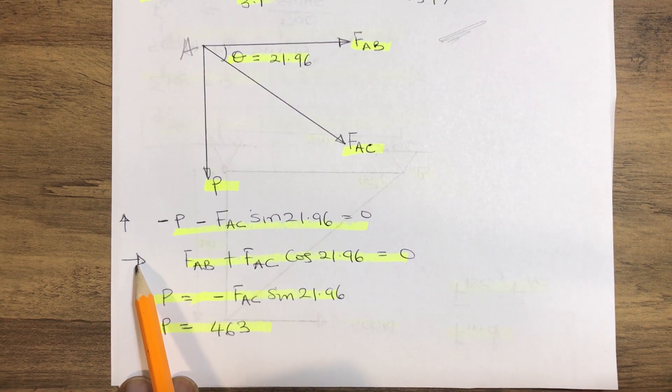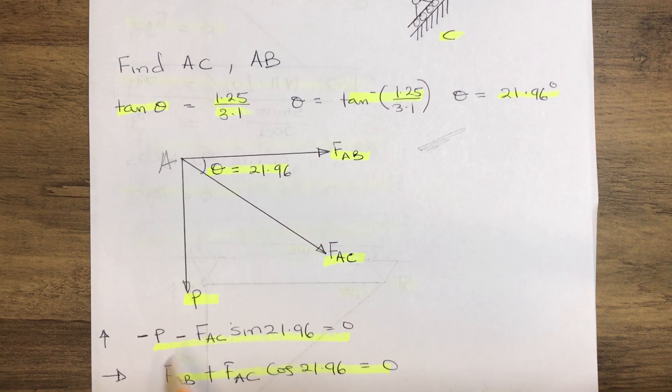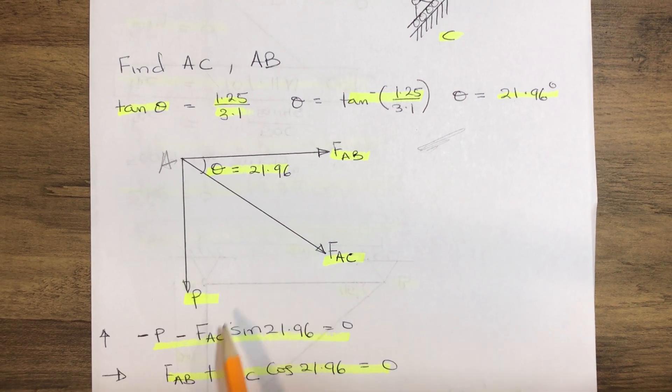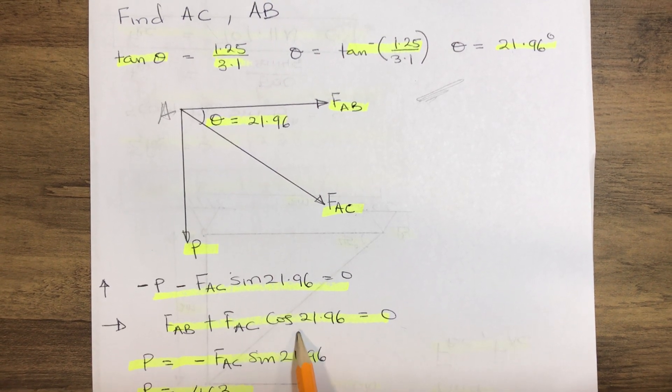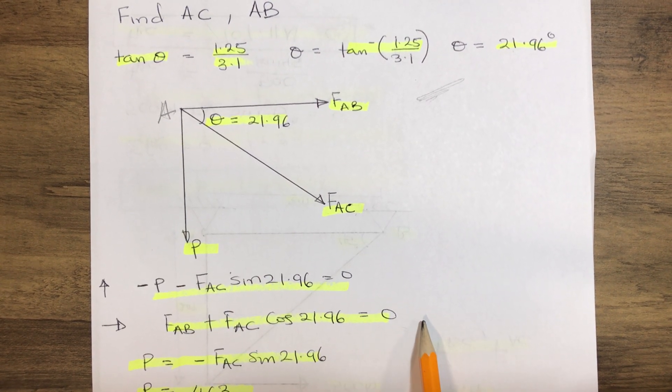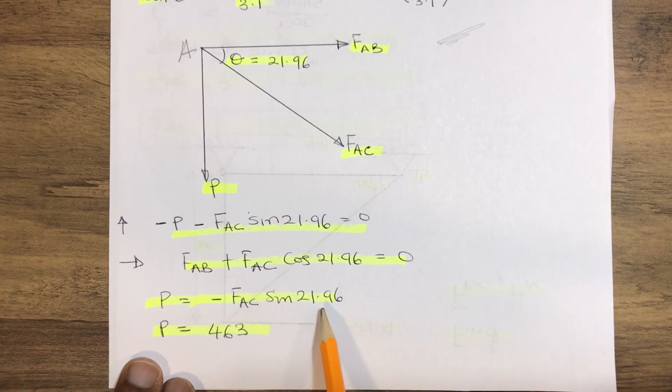We find our horizontal forces equilibrium, so therefore our FAB plus FAC cosine 21.96 equals zero. So therefore P equals minus FAC sine 21.96.